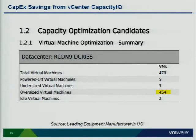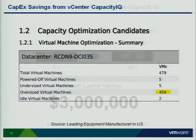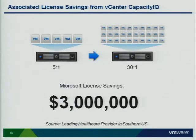Over 90% of that customer's VMs were over-provisioned — something you likely run into as well because everybody wants a large VM. Another customer, during their initial analysis looking at oversized, undersized, and idle VMs, realized they could save $3 million based on operating system and application licenses they would no longer need to purchase.